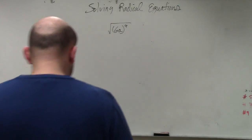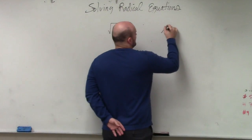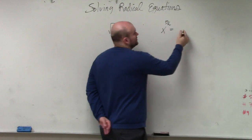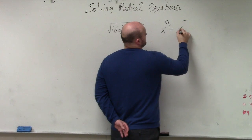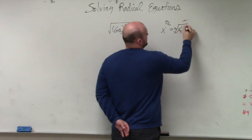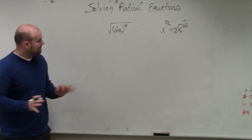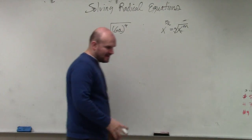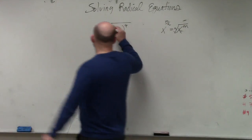So in this example, if you guys remember in your rules of exponents, x to the m over n is equal to the nth root of x to the m power. Remember that if there's no power shown or no index shown, then we can assume it is 2.